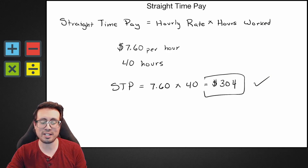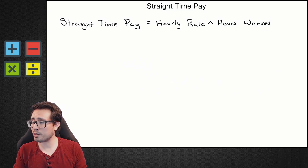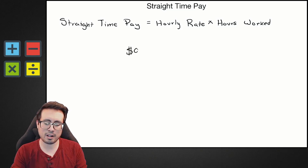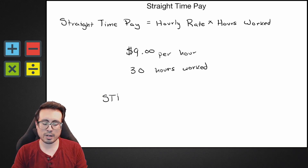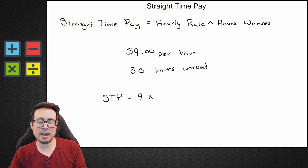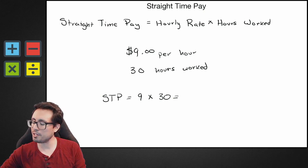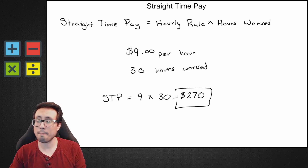Good job if you got that! Let's do one more together — again, feel free to pause and verify your answer. We have a job where we make nine dollars per hour, and this week we worked 30 hours. Setting up the equation: straight time pay equals nine dollars times 30 hours worked. That gives us $270 — our straight time pay for the week.